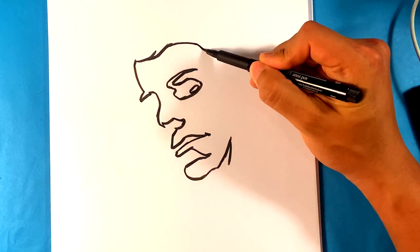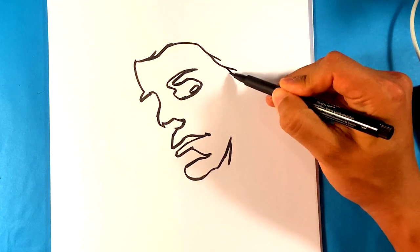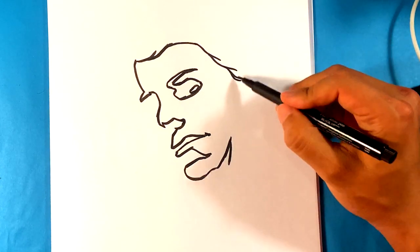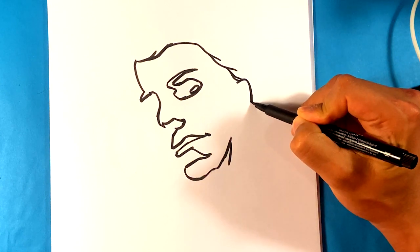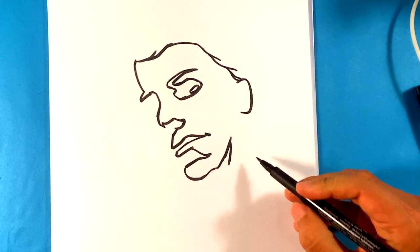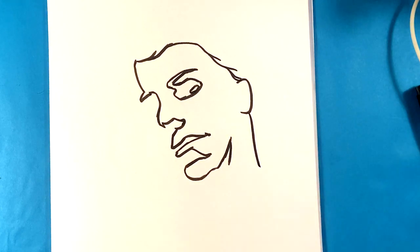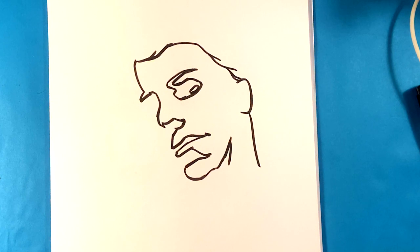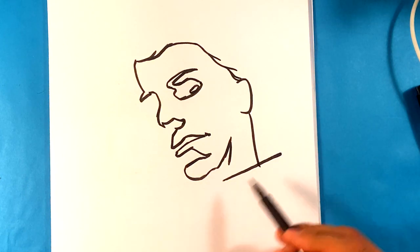And then we're going to pull some of the hair. Basically the wig, it has no sideburns. Finding the ear. Shape. Pulling down.